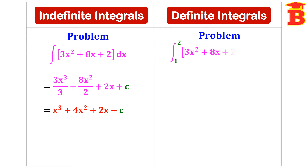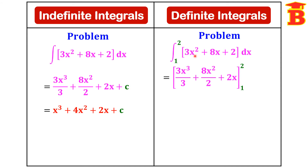Now consider the same function with limits from 1 to 2: integral from 1 to 2 of 3x² plus 8x plus 2 dx. The integration is the same: 3 times x³/3 plus 8 times x²/2 plus 2x. Simplifying — 3 cancels giving x³, 2 cancels giving 4x² — so we have x³ plus 4x² plus 2x, with limits 1 to 2. Here the lower limit is 1 and the upper limit is 2.